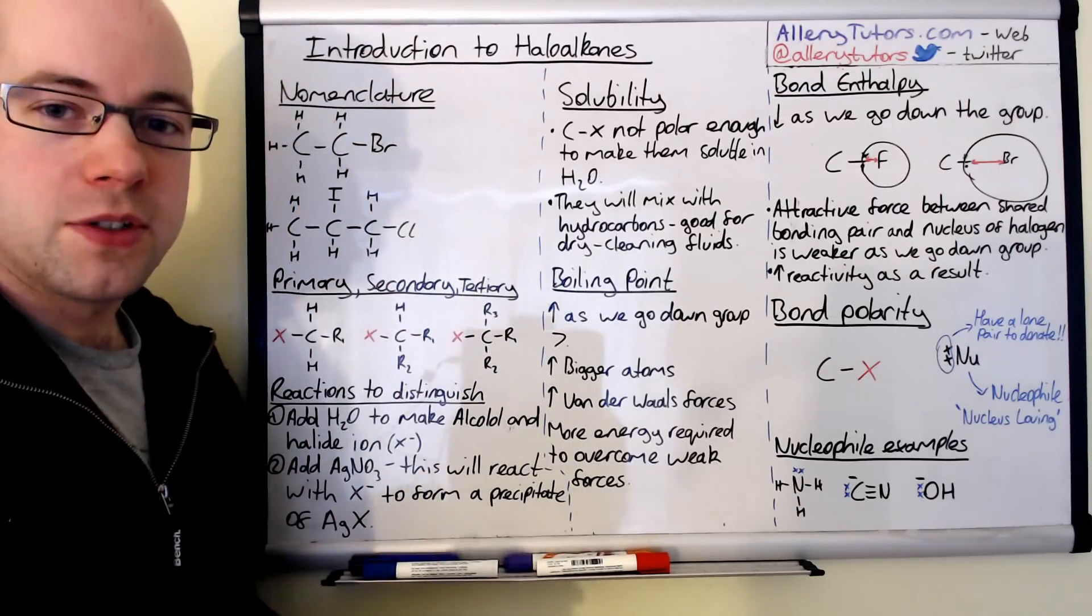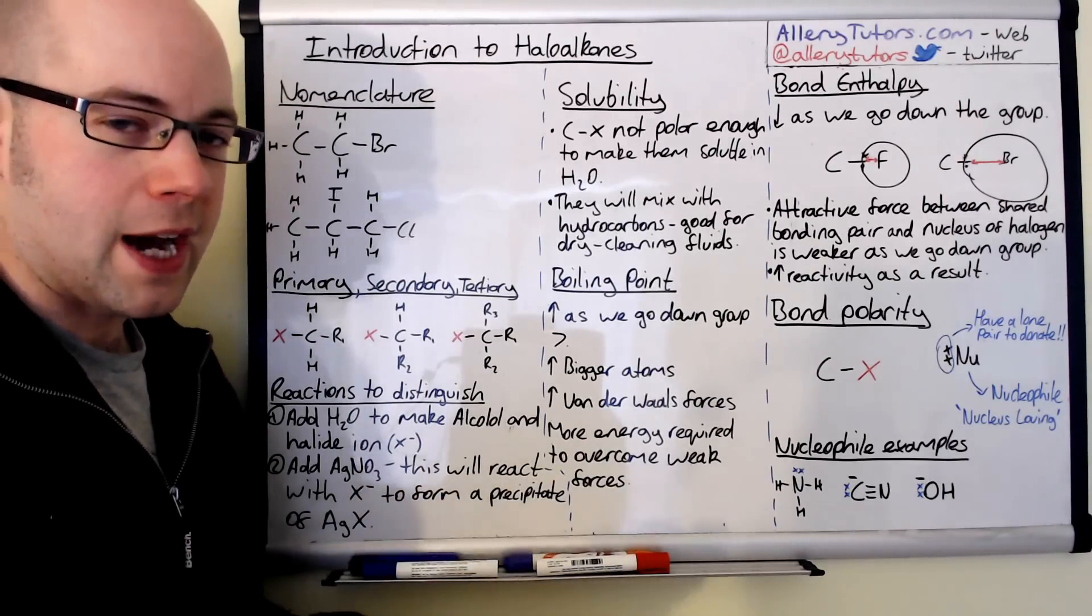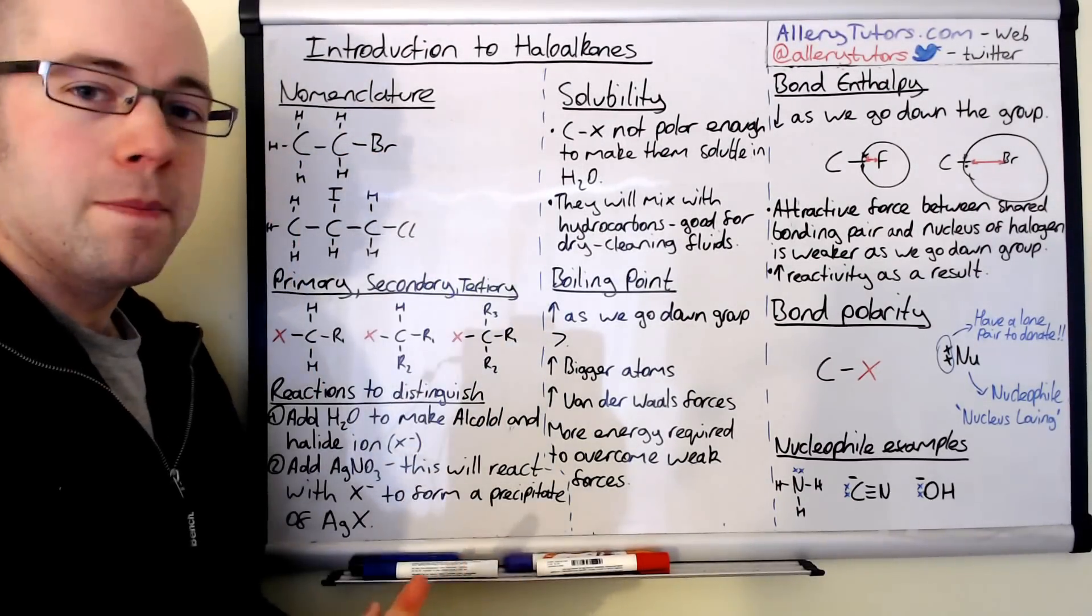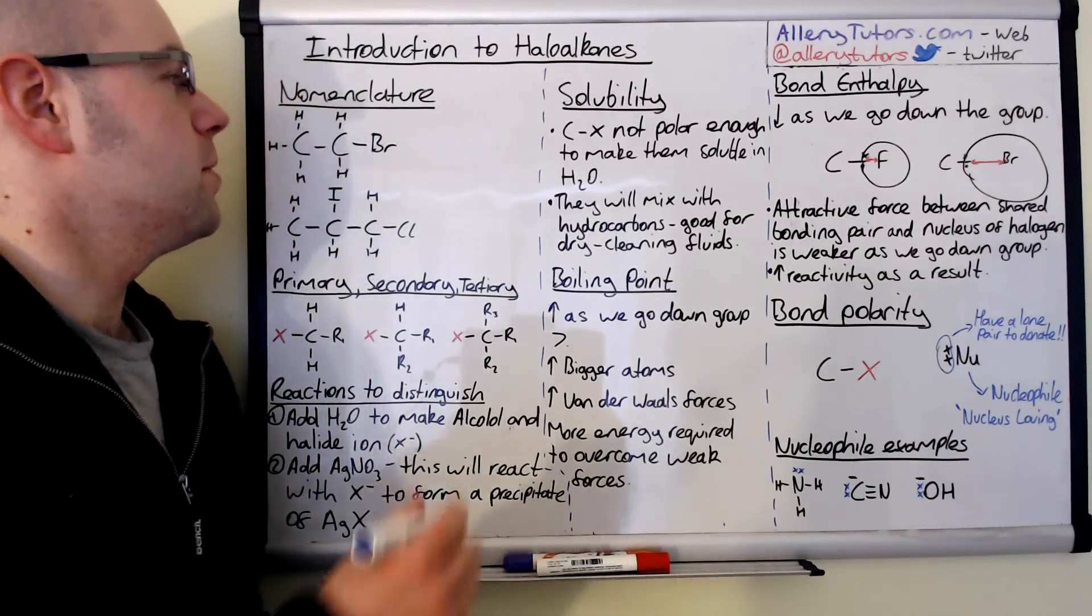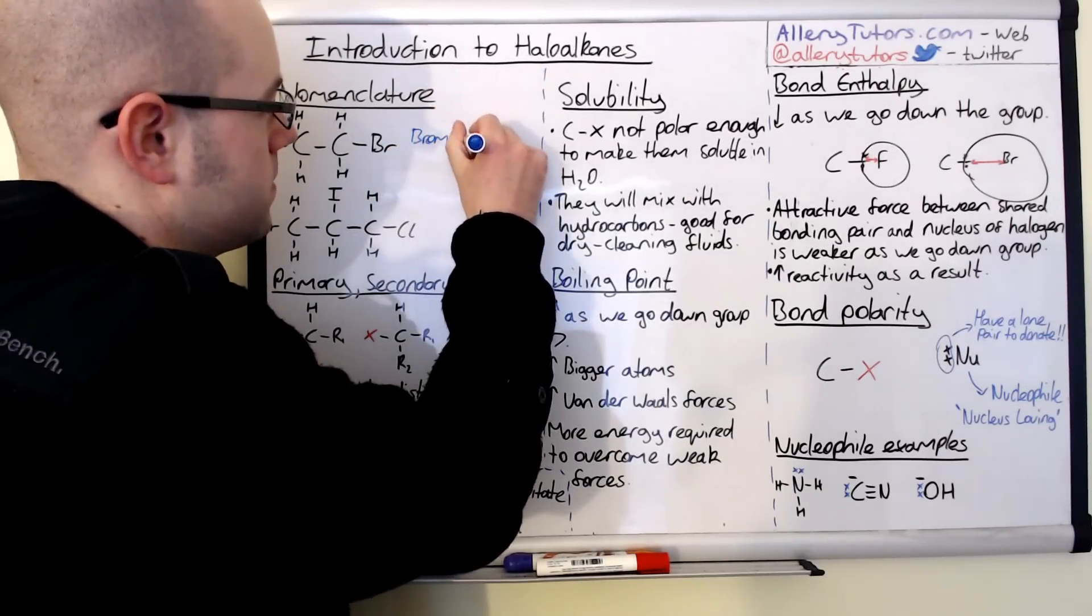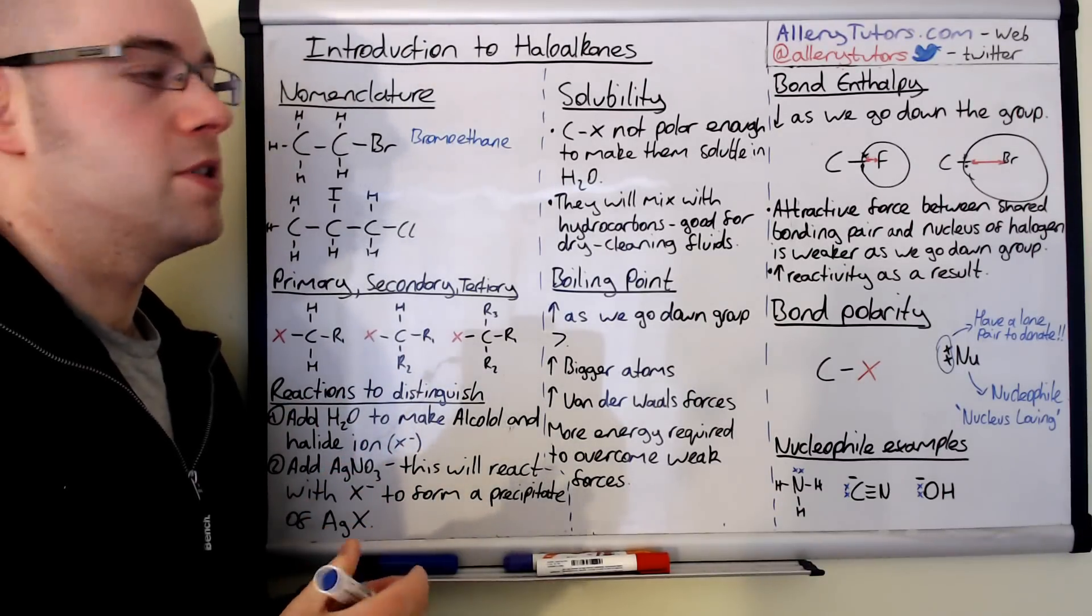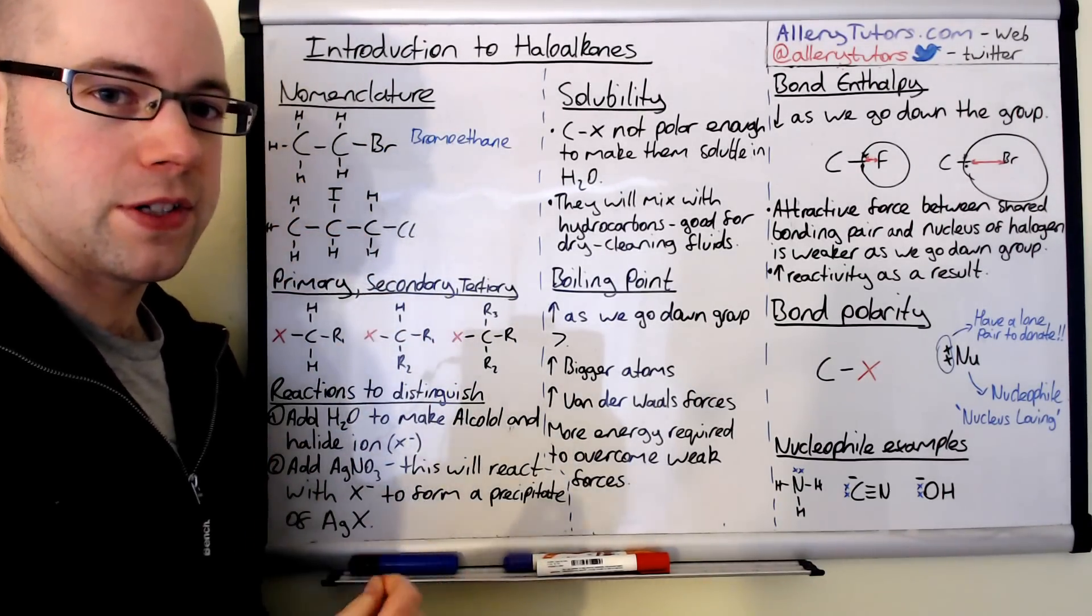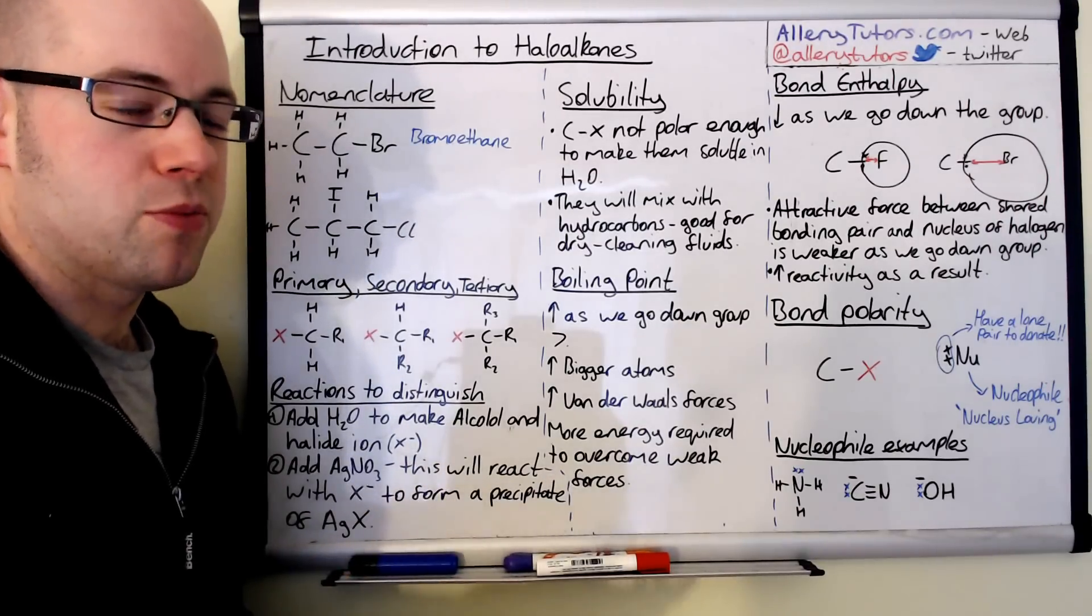So we're going to start with the name haloalkane. As the name suggests we put the halogen before the alkane. So we've got an example here, you can see we've got a bromine atom bonded to an ethane molecule. In terms of nomenclature we call that bromoethane. We don't need to put a number at the front because even if the bromine appeared on the other carbon that would still be the first carbon, so we just leave out the number. We can put the number in but it's not required.